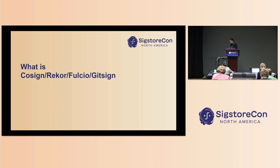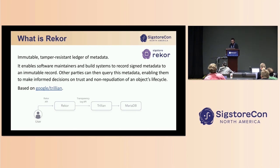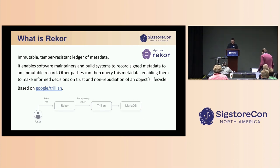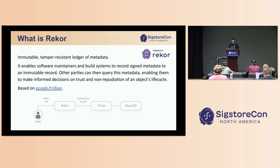Let's quickly go over some of the Sigstore tooling to understand how they work and how we can use them in complex CI environments. The first is Rekor — there's been a lot of talk about it here. Basically, it's an immutable, tamper-resistant ledger of metadata built on top of a Trillian tool by Google. It's a public infrastructure that everyone can add metadata to, and query and verify. In Sigstore it's mainly used to store signatures for artifacts and the short-lived certificates used to sign those artifacts.